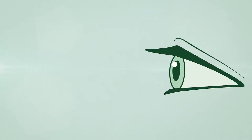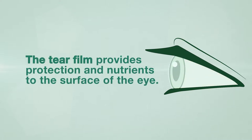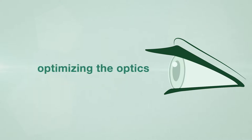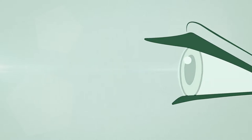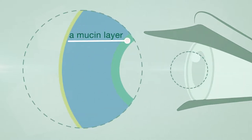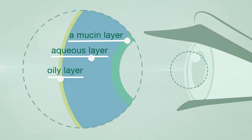A normal tear film — the liquid layer that covers your eye — is required to provide protection and nutrients to the surface of the eye. It is also critical in optimizing the optics of the eye to allow for excellent vision. The tear film consists of three layers: a mucin layer, an aqueous layer, and an oily layer.